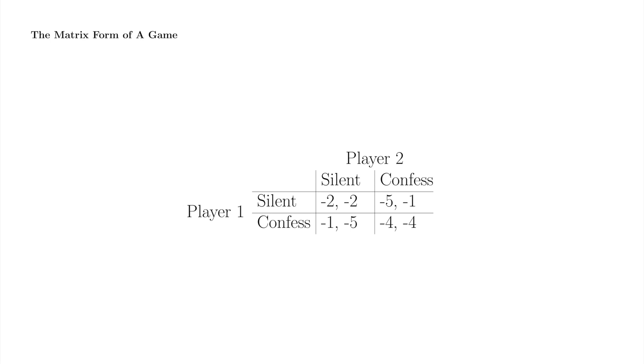The players, 1 and 2, are labeled in blue here. In a matrix game, we locate one of the players to the left of the matrix proper and the other above the matrix proper.